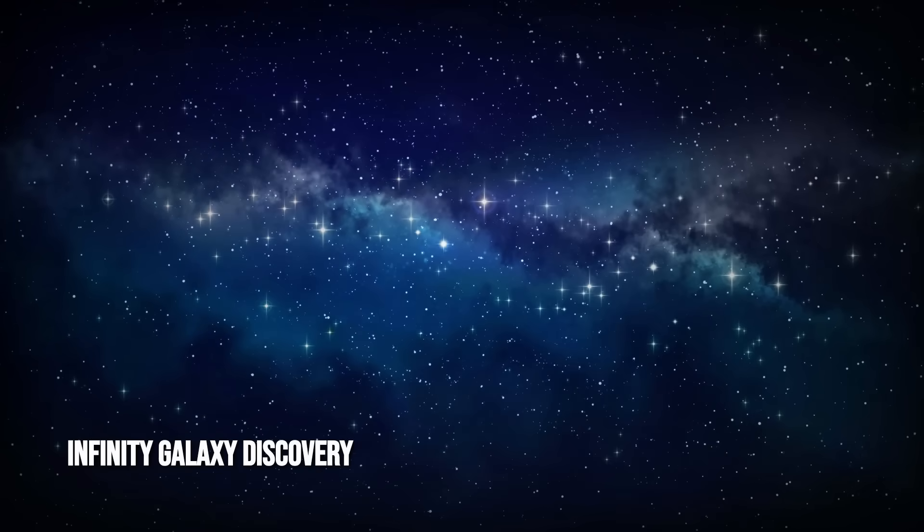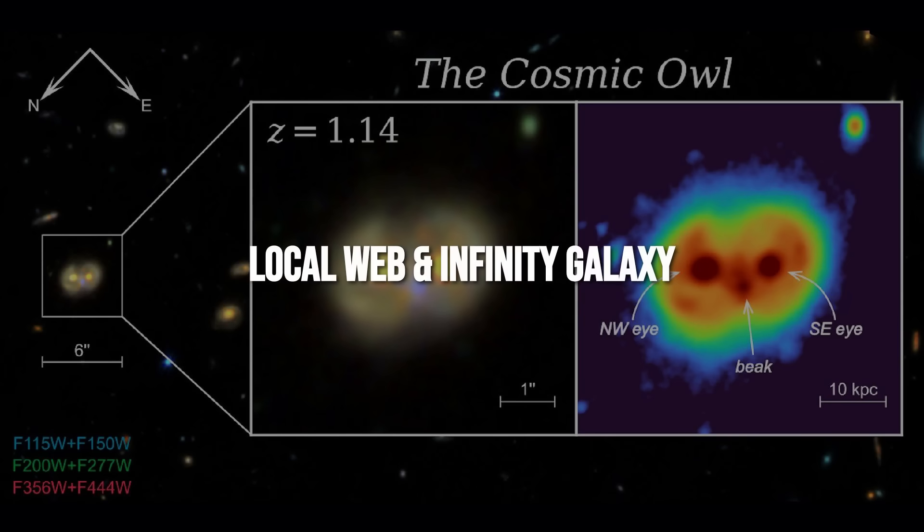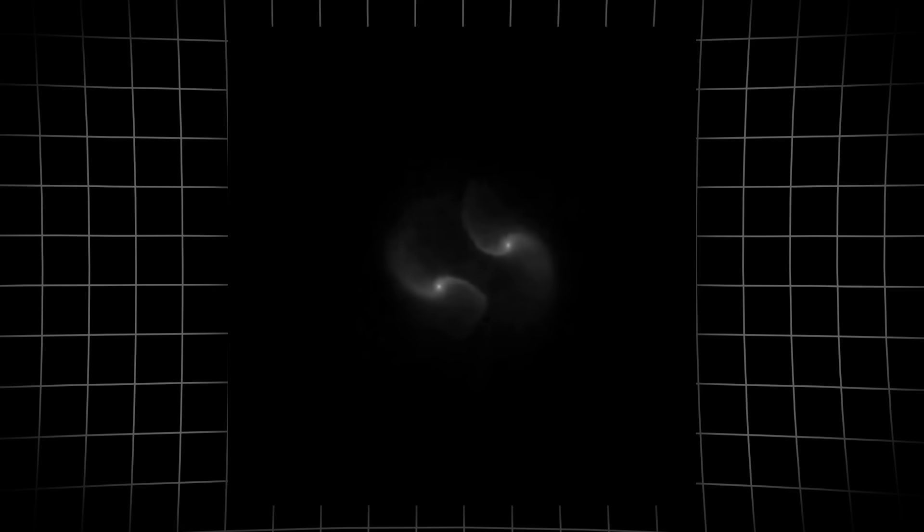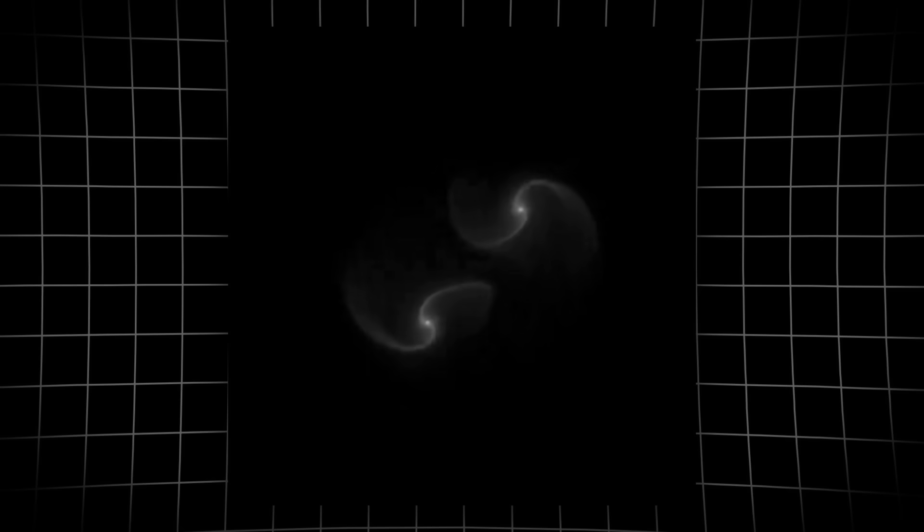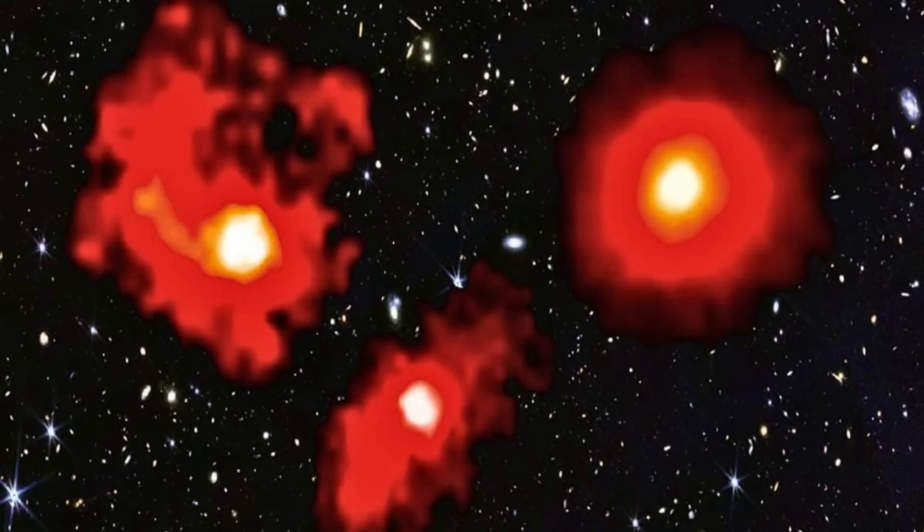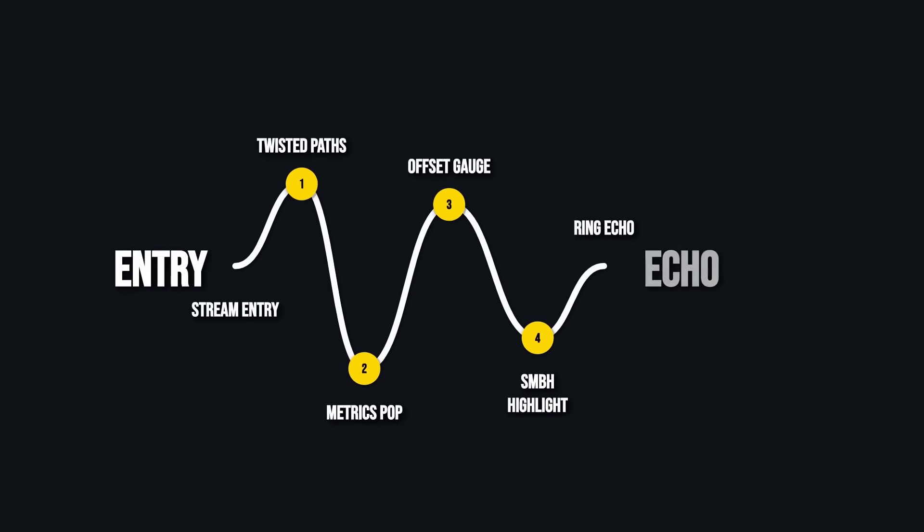Yet among these familiar shapes, one discovery stands apart: a system known as the Infinity Galaxy. This extraordinary object, catalogued at Redshift 1.14, reveals a figure-eight silhouette, two disk galaxies colliding almost head-on. Each galaxy remains visible as a compact red core, circled by rings of stars and gas, their orbits twisted by the force of their encounter.